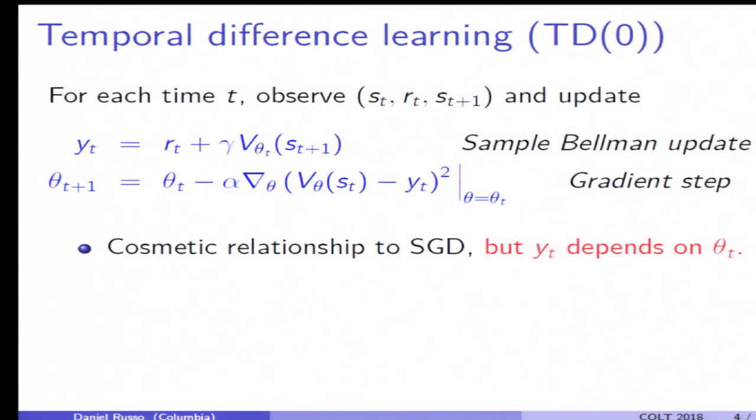Now I'm going to say that by Bellman's equation, that should be about equal, on average, to the value prediction I have from my current state.